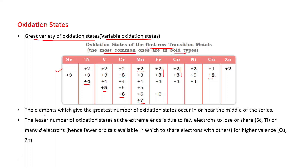If you observe, the elements which give the greatest number of oxidation states occur in or near the middle of the series — that is manganese. Manganese shows 6 oxidation states, from +2 to +7. The lesser number of oxidation states at the extreme ends is due to few electrons to lose or share. For example, scandium and titanium have only 3 and 4 electrons respectively, so they show fewer oxidation states.